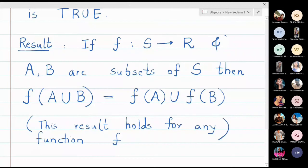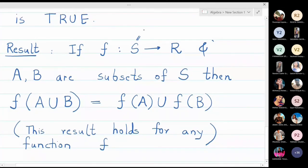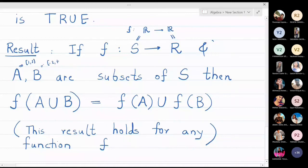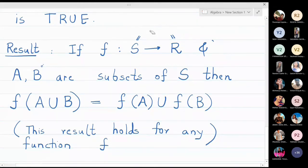In the above example, the function was from R to R, so S and R were both real numbers. A = [1, 2] and B = [-2, -1] are both subsets of R. Therefore we verified that f(A∪B) = f(A)∪f(B). This statement is true for all functions.